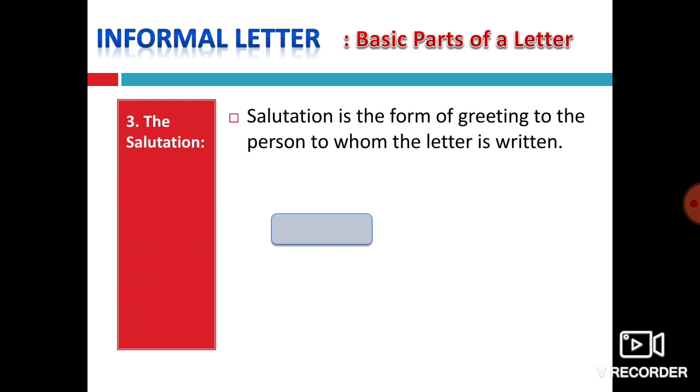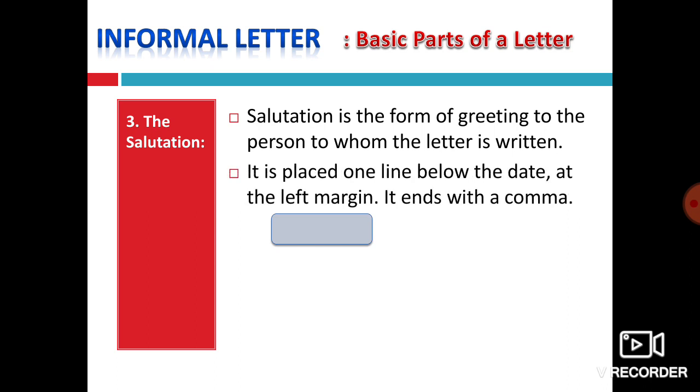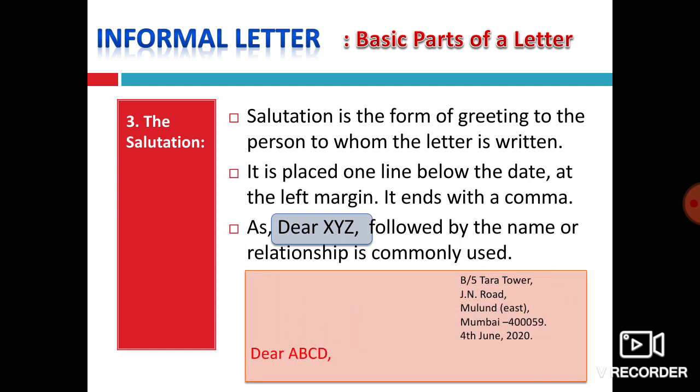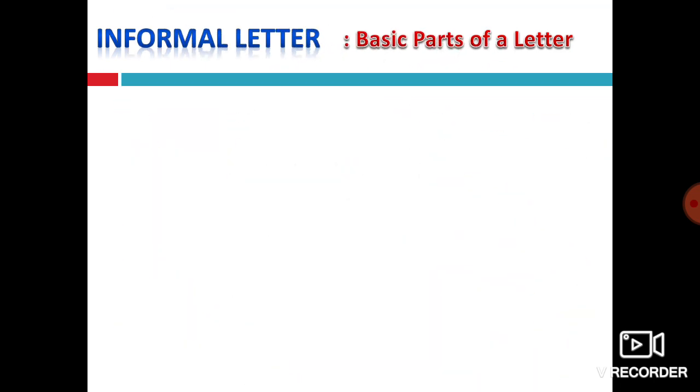The salutation. What does the salutation mean? Salutation is a form of greeting to the person to whom the letter is written. It is placed one line above the date at the left margin. It ends with a comma. As dear XYZ followed by the name or relationship is commonly used. Relationship is commonly used means if you are writing a letter to your brother, sister, you say bhai or didi, or whatever you say to your relative, uncle, auntie, kaka. That relationship you can use while writing informal letter. Here you can see a sample. Address is written in the right side and the salutation is written on the left side just below the date.